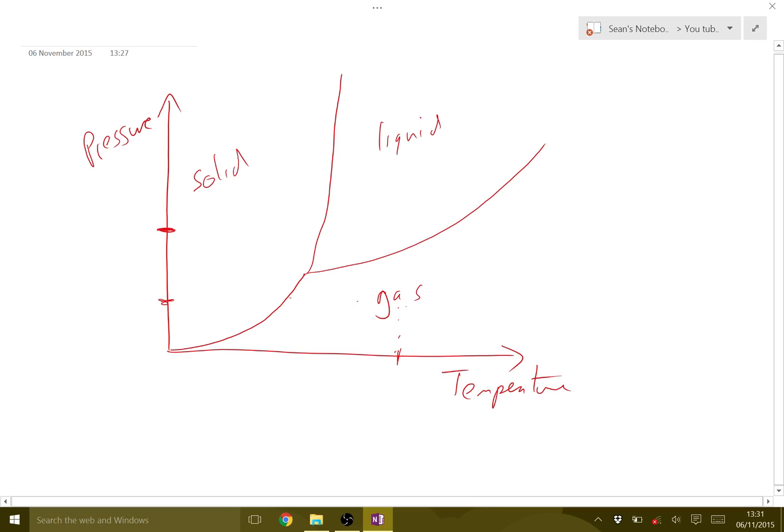A few other things you need to know about this graph: these lines between the phases tell us that on those lines, the two different phases are in equilibrium. Along this line here, the material at these temperatures and pressures will be in equilibrium between solid and liquid.